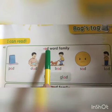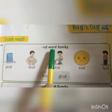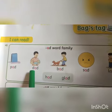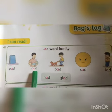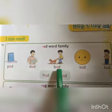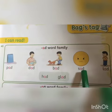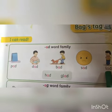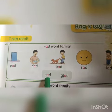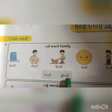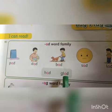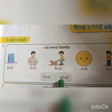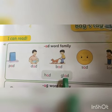Now we will read the -at word family in our book. P, at — Pat. D, at — Dad. B, at — Bad. S, at — Sad. L, at — Lad. H, at — Had. Gl, at — Glad. G and L come together and make the sound gl. Gl, at — Glad.